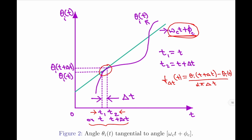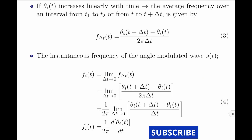Please note the numerator of this equation represents the difference between θᵢ(t + δt) and θᵢ(t), which is simply δy, and in the denominator we have the difference between t and t + δt, which is δx. Therefore, f_δt(t) represents the slope of the tangential curve. So: f_δt(t) = [θᵢ(t + δt) − θᵢ(t)] / (2π·δt).